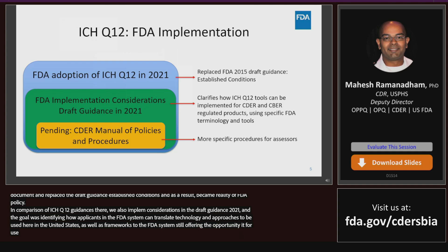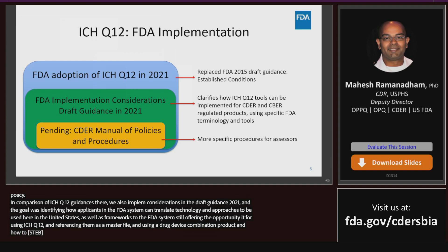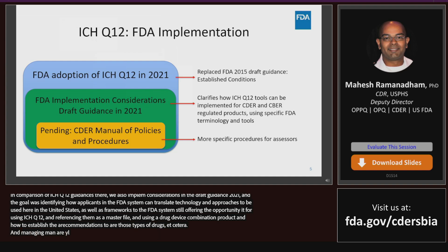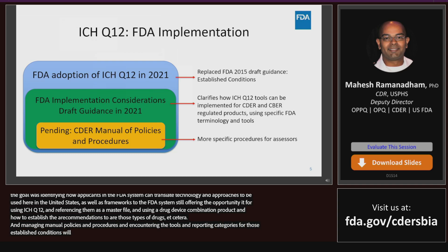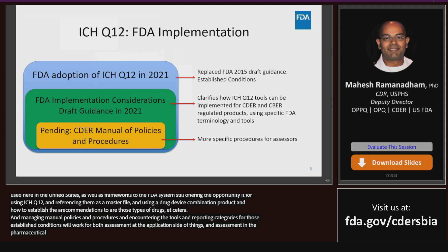The goal of the implementation guidance was to identify and clarify how applicants working in the FDA system can translate the terminology and approaches for use in the United States, as well as accounting for specific frameworks to the FDA system — for example, using Q12 tools in the context of referencing a drug master file or a drug-device combination product. What we are working on now is a manual of policies and procedures focusing on specific assessment procedures for how different disciplines encountering ICH Q12 tools — specifically proposals for established conditions and reporting categories — will work through the assessment, both from the application side and the pharmaceutical quality system side.